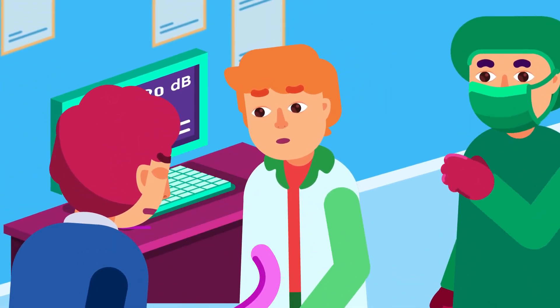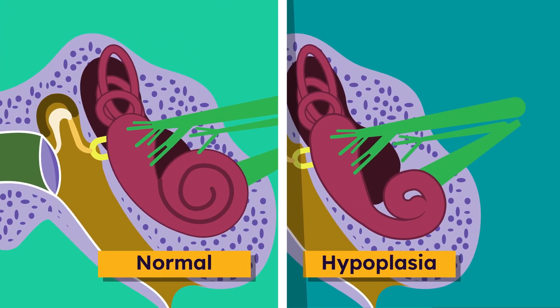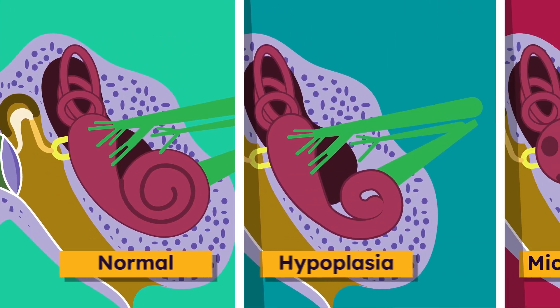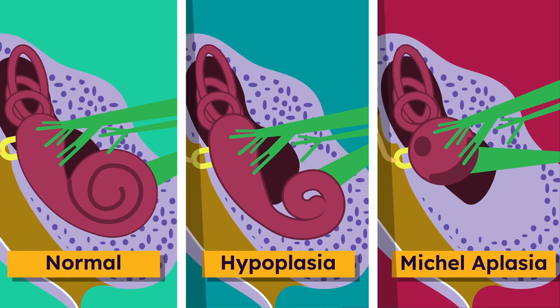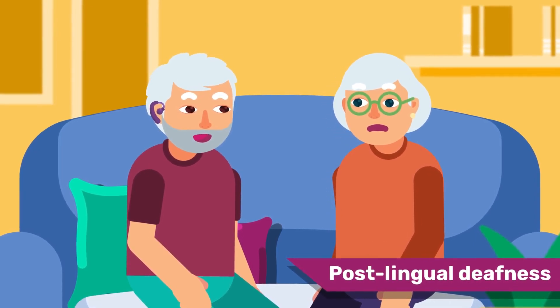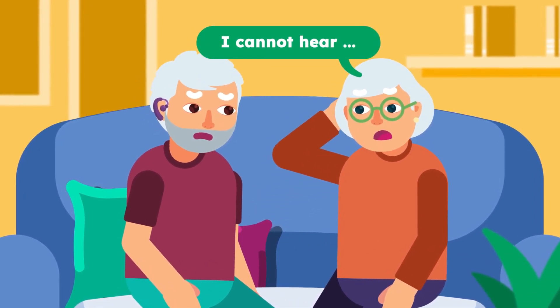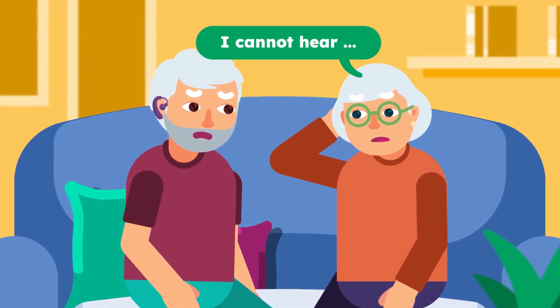Medical: some deformities of the inner ear anatomy may still allow for cochlear implants, but others — like Michel aplasia — are a contraindication for cochlear implant. Linguistic: the key question is whether the patient began to lose hearing before or after speech development.